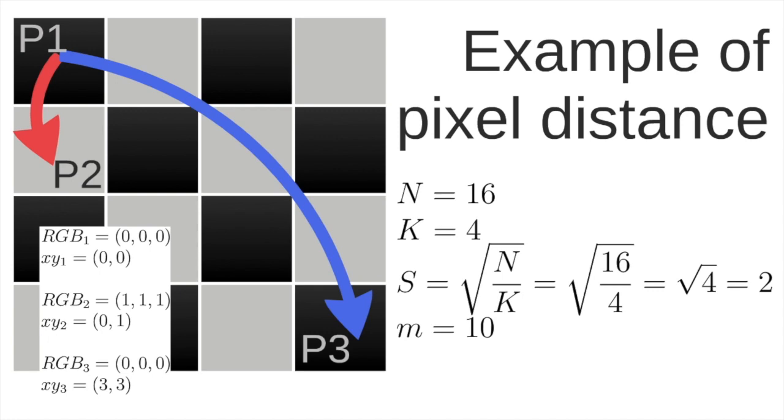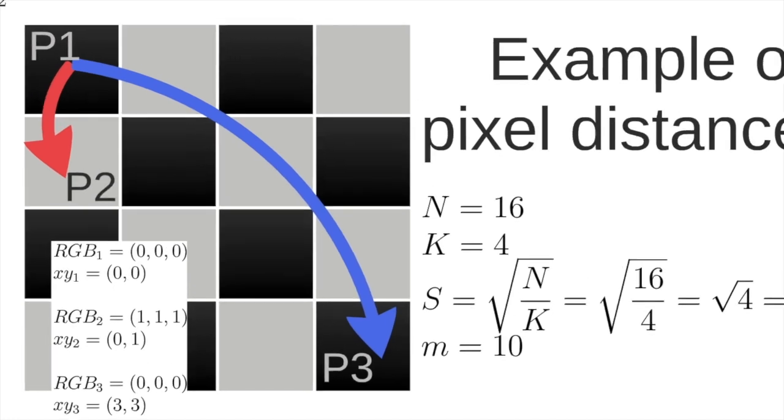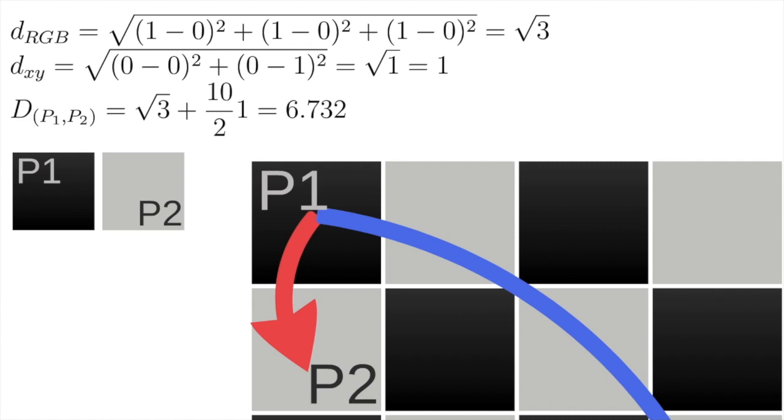So how to compute the distance between pixel 1 and pixel 2? We apply that equation that I showed previously which is the distance in the RGB space. In this case pixel 2 has the components 1, 1, 1 and pixel 1 has the components 0, 0, 0. This distance will be equal to the square root of 3. And the distance in the XY space will be computed by the coordinates of the two pixels which will be equal to 1. So the final distance between pixel 1 and pixel 2, considering that they are different visually but they are neighbors, it will be equal to 6.732.